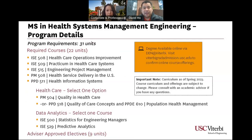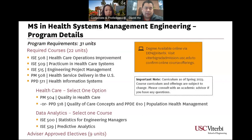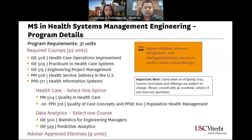The Health Systems Management Engineering program is a 31-unit minimum program. The required coursework consists of five courses — kind of a mix between our department, Preventive Medicine (PM), and Public Policy (PPD). We have agreements with all these departments for our students to take these courses. The remaining electives you choose from topics you're interested in, whether they're preventive medicine, ISE, or PPD courses.